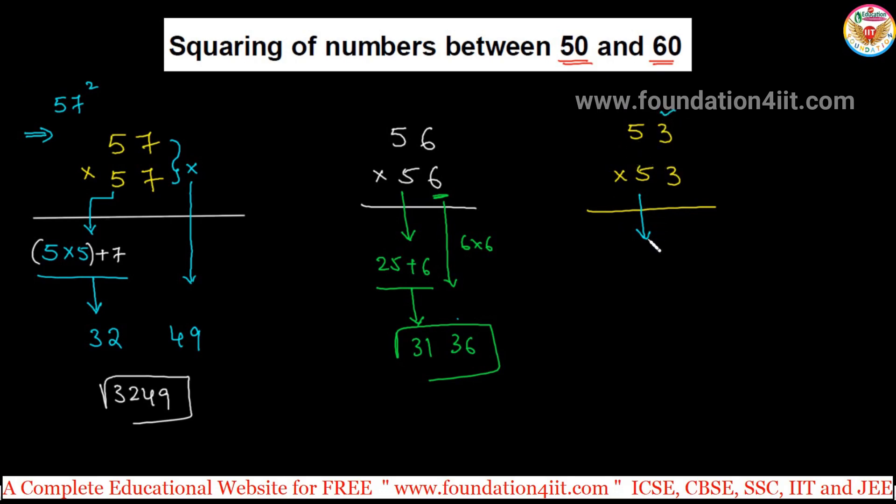just take 25 and add the units place: 25 plus 3, 28. Immediately, 3 into 3 is 9. It is not a two-digit number, so you're supposed to take 09. Remember that: in case you get single digit, you take 09. 2809. Same concept you can apply to all the numbers between 50 and 60.